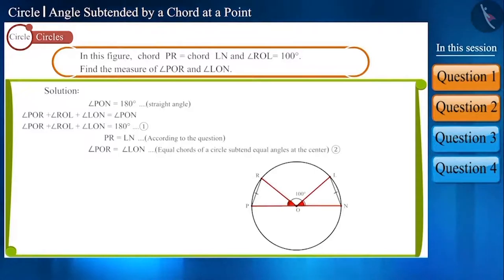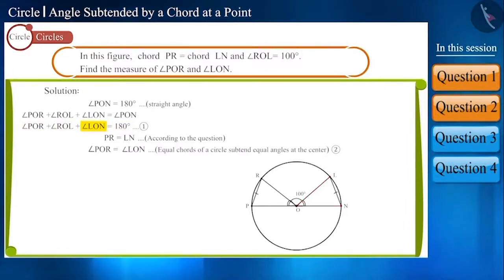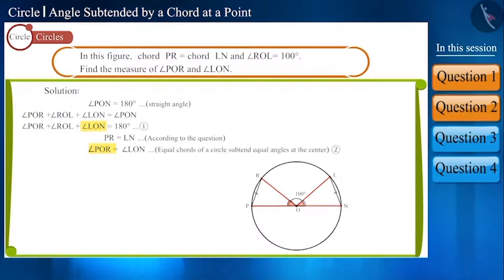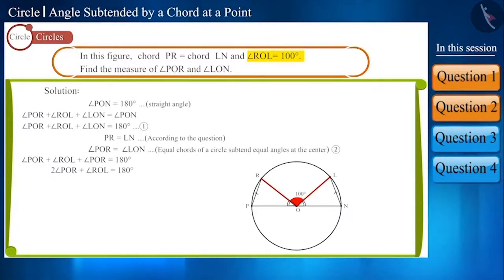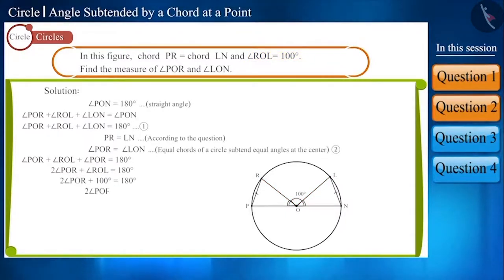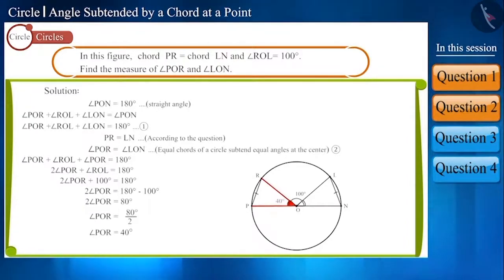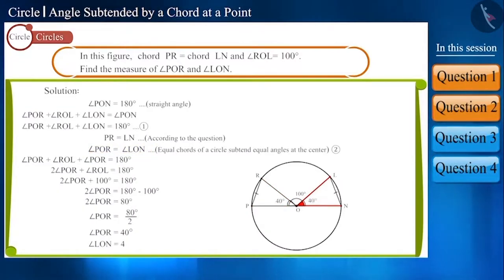Now, since both these angles are equal, in the equation we can replace angle LON with angle POR. We are given that angle ROL measures 100 degrees. By placing this measurement in the equation, we can find the measurement of angle POR as 40 degrees. Since both angles are equal, angle LON will also be 40 degrees.